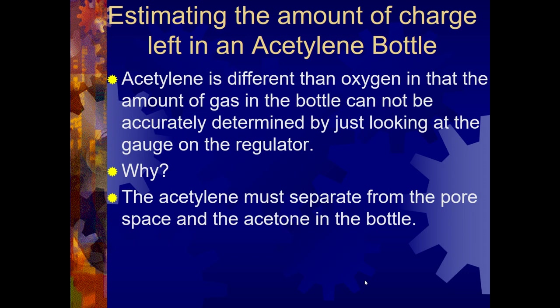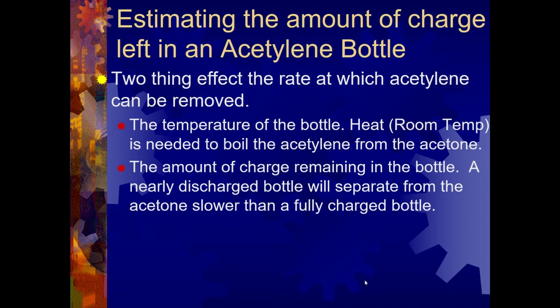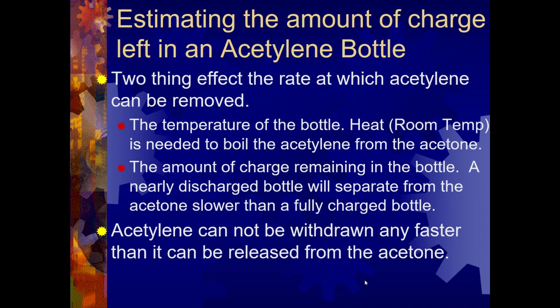We're not going to talk long about how you estimate the amount of charge left in a bottle because it's actually pretty difficult to do. You sometimes can't just look at the gauge on the regulator because the acetylene, acetone, and pore space goes in a rate that doesn't accurately tell you how much is actually left in the bottle. Acetylene is also affected by the temperature of the room you hold it in — colder temperatures mean that it comes out of the bottle slower. One time when I taught at Fruita I thought I was out of acetylene every morning at eight o'clock all winter. My teaching partner would go out at two o'clock and tell me I was nuts because acetylene was coming out of the bottle just fine. It had to do with the temperature at 8 a.m. all winter. Acetylene can't be withdrawn any faster than it can be released from the acetone. This is important to know because if you have an acetylene tank hooked up to a manifold where several stations are pulling off of it, that might affect you. The safe rate for drawing acetylene out of a cylinder is only one seventh of the cylinder at a time.